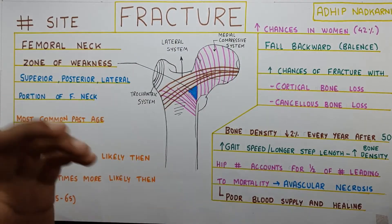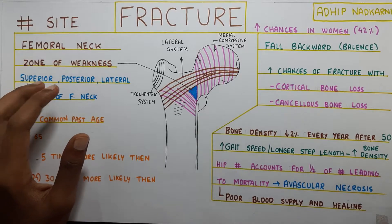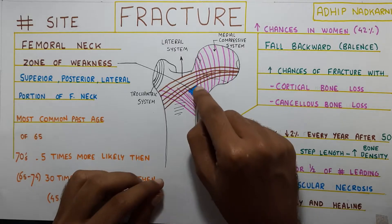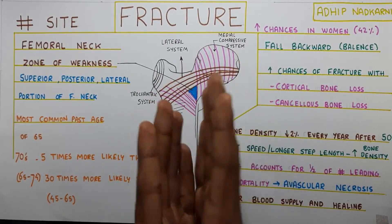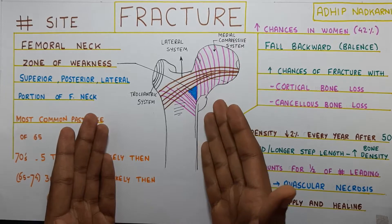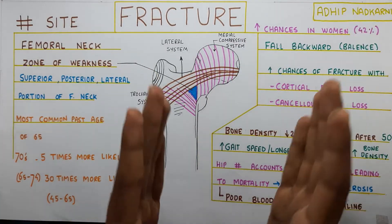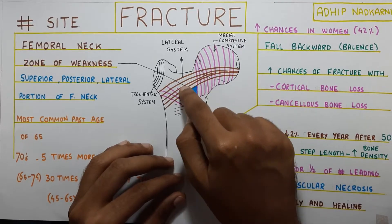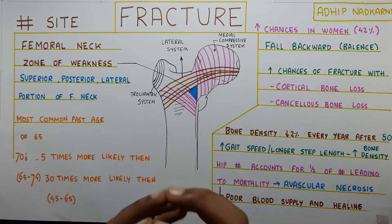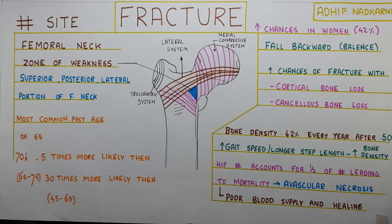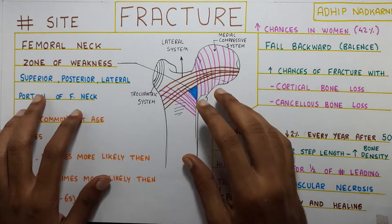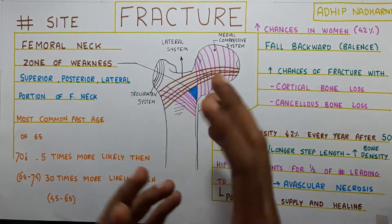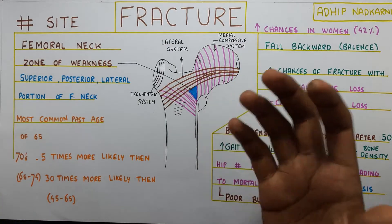Starting with the site, the femoral neck is a very common site for fracture at the hip joint. The zone of weakness, which we have talked about previously, is the blue part that falls between the lateral system and the medial compressive system — the arrangement of the cancellous bone. The space between these systems which doesn't have a proper arrangement is called the zone of weakness, and it is a pretty common fracture site. The superior, posterior, and lateral part of the femoral neck is also a portion where fracture can occur pretty often.